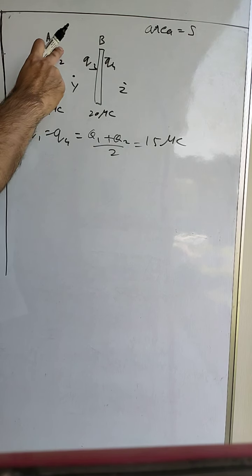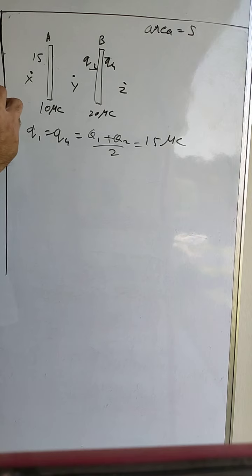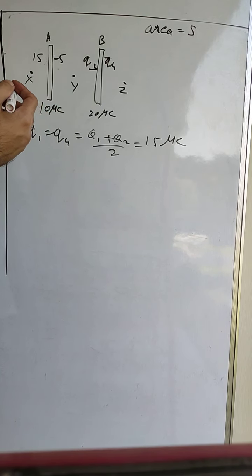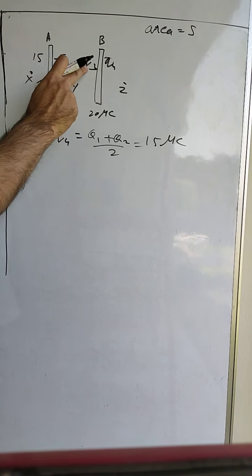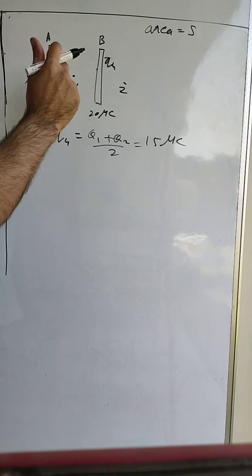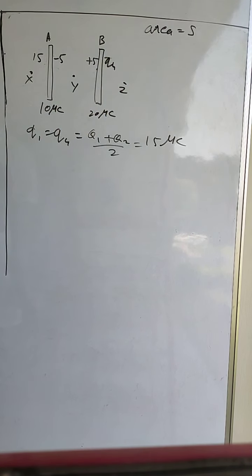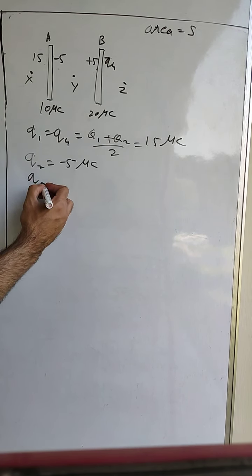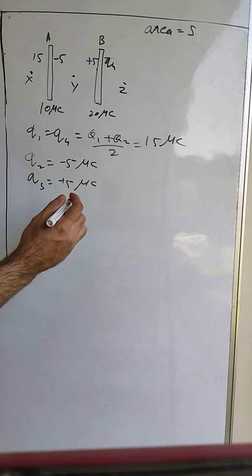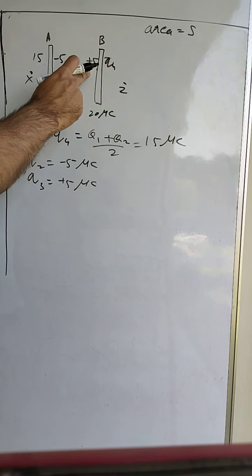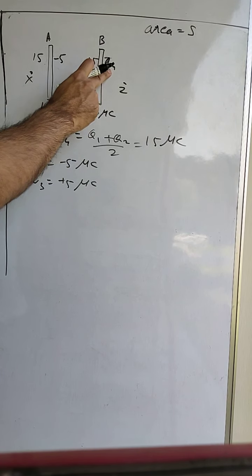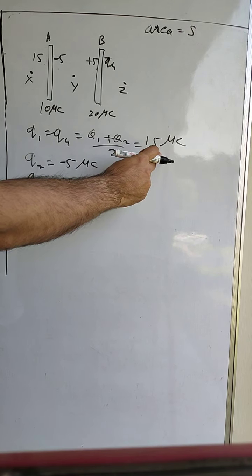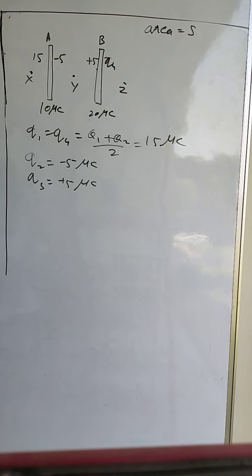Since q1 is 15 microcoulombs and the overall charge on plate A is 10 microcoulombs, the inner surface q2 must be minus 5 microcoulombs. Since inner surfaces have equal but opposite charges, q3 becomes plus 5 microcoulombs. Checking plate B: 5 + 15 = 20 microcoulombs, which verifies our answer. So q1 = 15μC, q2 = -5μC, q3 = +5μC, q4 = 15μC.